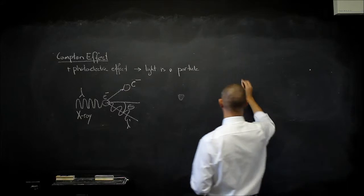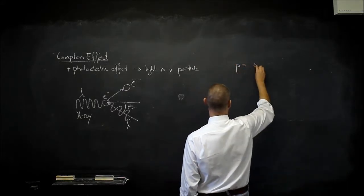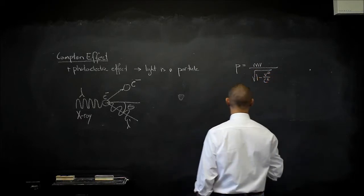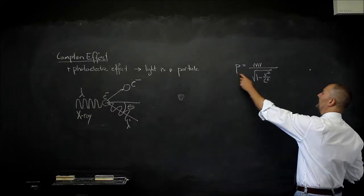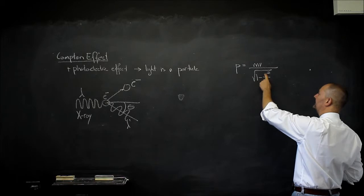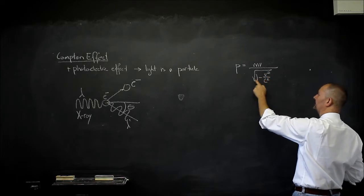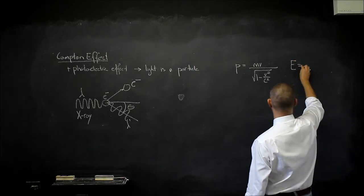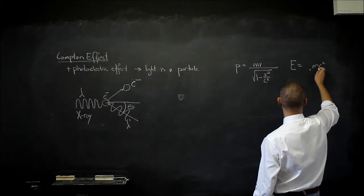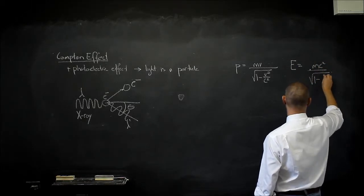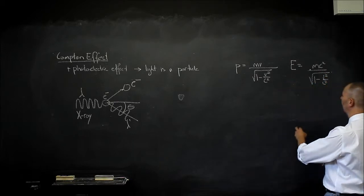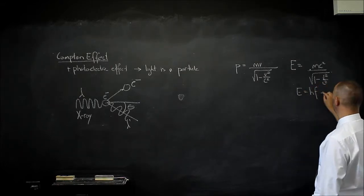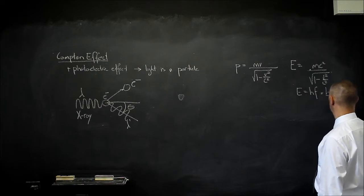If we look at the momentum of a relativistic particle, we remember that it's mv divided by the square root of 1 minus v²/c². Clearly, that is for a particle and it cannot be the momentum of a photon, because for a photon v equals c — you'd get 1 minus 1 equals 0, and you can't divide by zero. Similarly, the energy of a relativistic particle is mc² divided by the square root of 1 minus v²/c², and that's not the energy of a photon. The energy of a photon equals Planck's constant times its frequency, which equals hc divided by its wavelength.